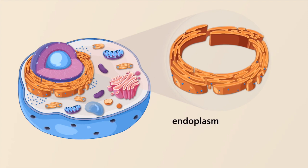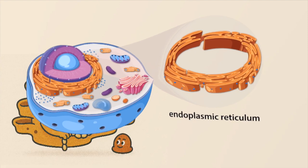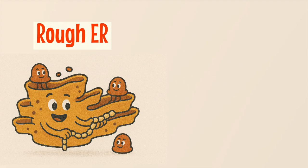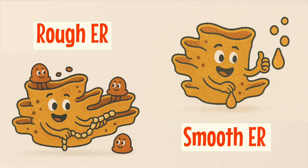Endoplasmic reticulum, smooth or rough. Synthesizing fats and proteins, then folding them up. Rough got ribosomes pumping out that stock. Smooth making lipids, got that detox on lock.